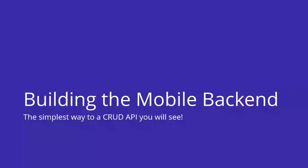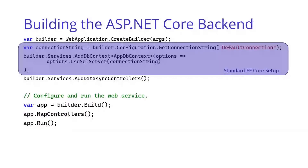So let's talk about building the mobile backend. This will really be the simplest way that you could create a basic CRUD API that you will ever see. To start with, we use a standard Entity Framework Core setup, so that means you create a connection string to connect your database to your application. You'll use SQL Server, Cosmos DB, or whatever other drivers you want.